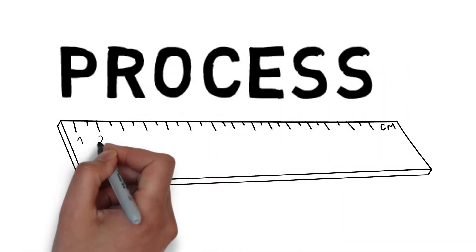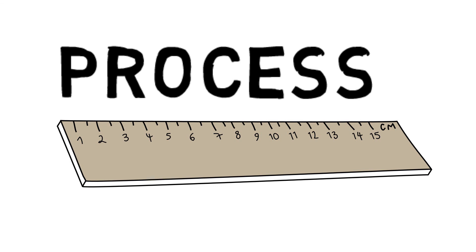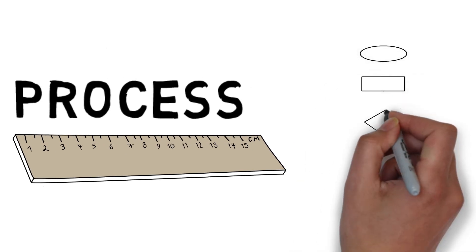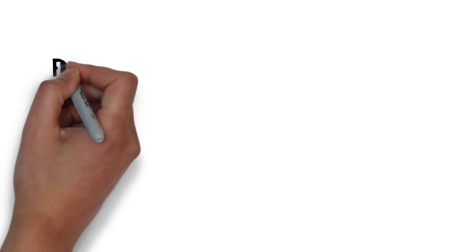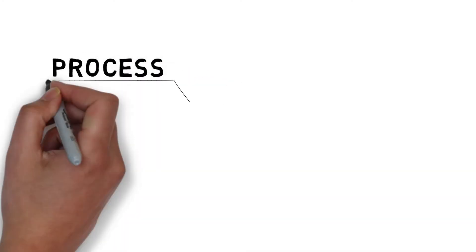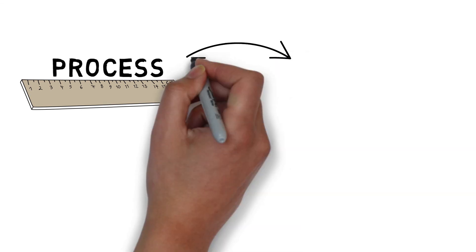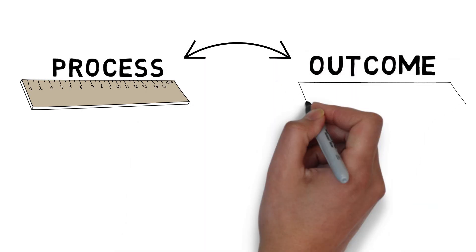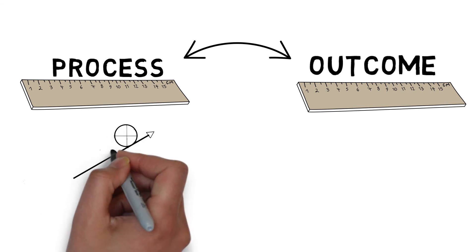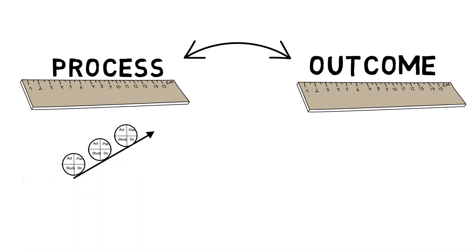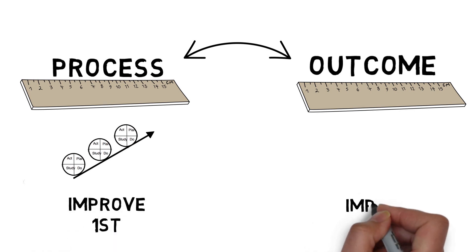If our outcome measures reflect the voice of the patient, then process measures are sometimes referred to as the voice of the steps in the process. Process measures help us learn by showing us whether the changes we are making result in improved performance. Process measures should logically be tied to our outcome measures, and the relationship between them should make intuitive sense. Process measures tell us how the parts of the system are performing and are very helpful when we are testing our changes using our Plan-Do-Study-Act cycle. Typically, process measures show improvement before outcome measures.